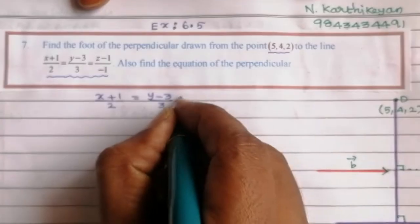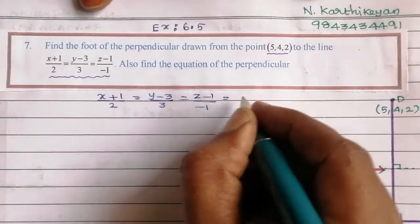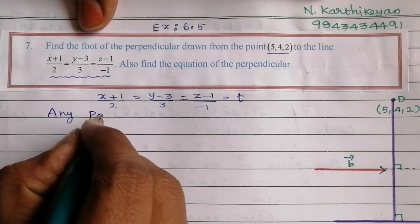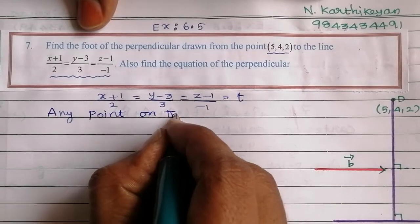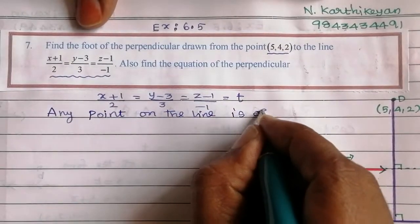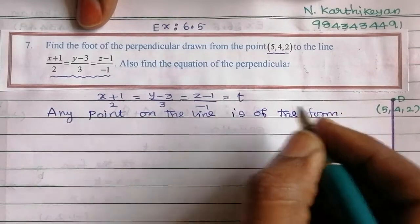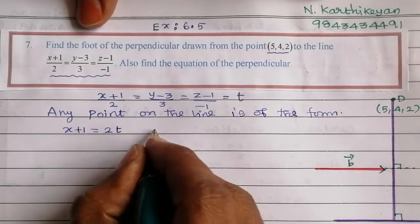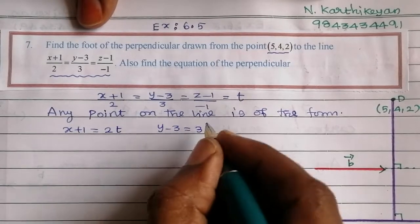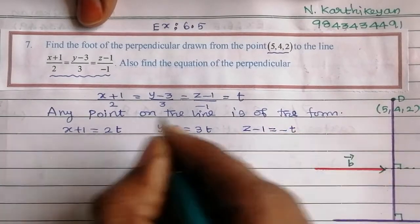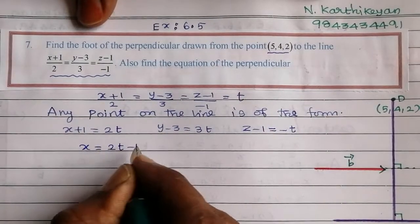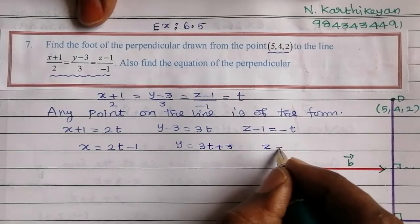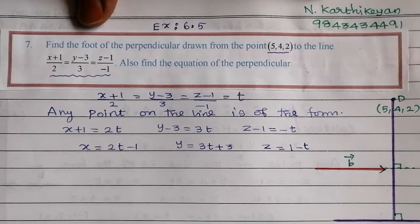We set (x+1)/2 = (y−3)/3 = (z−1)/(−1) equal to some constant t. So x+1 = 2t, giving x = 2t−1; y−3 = 3t, giving y = 3t+3; and z−1 = −t, giving z = 1−t.